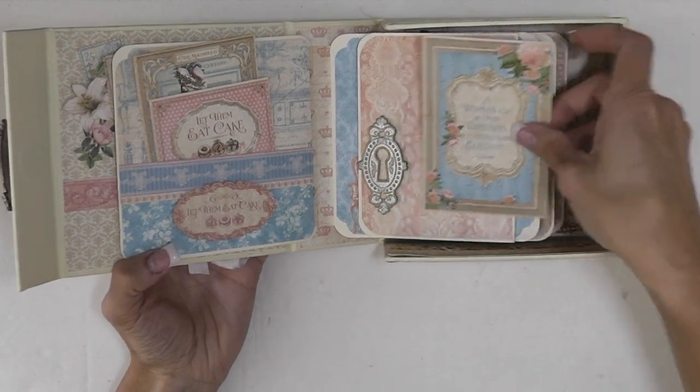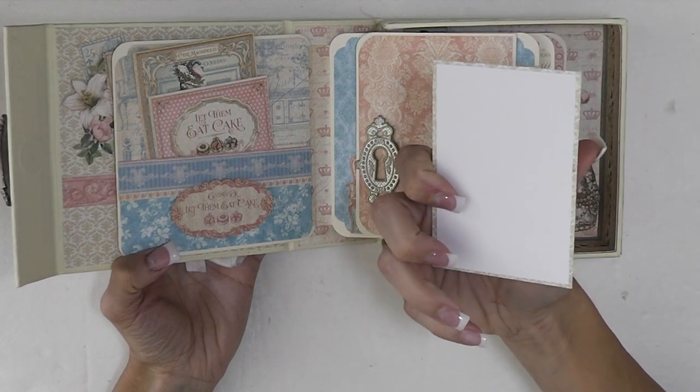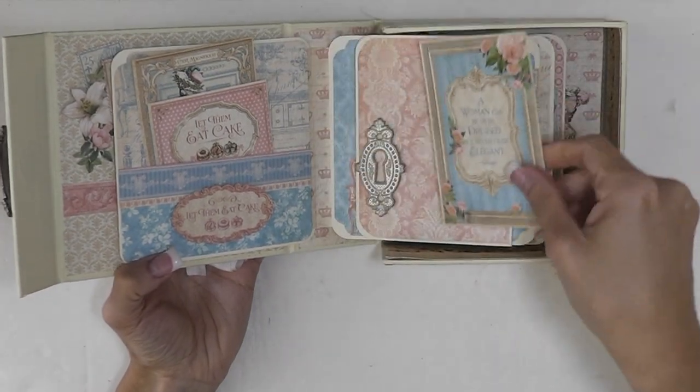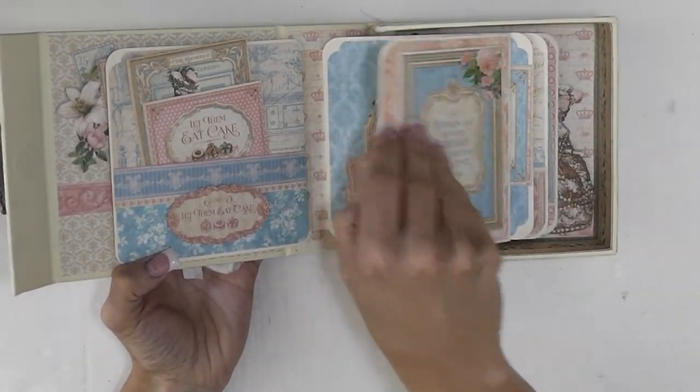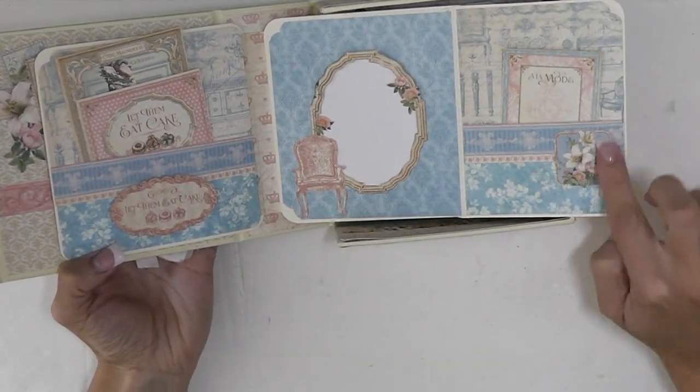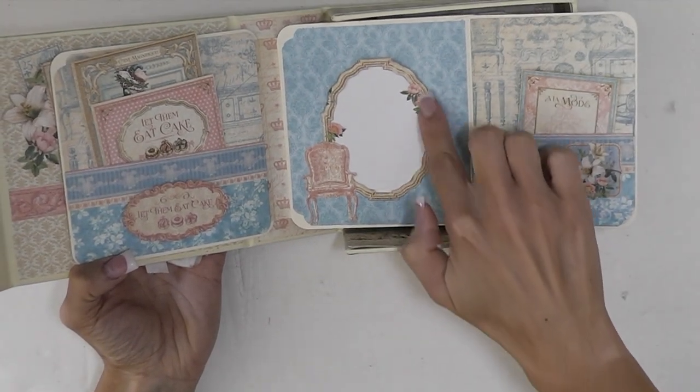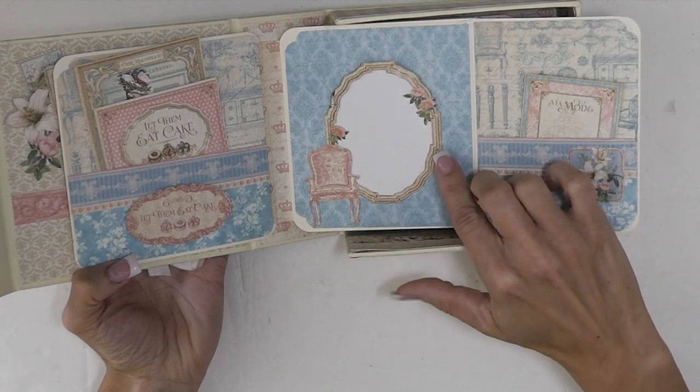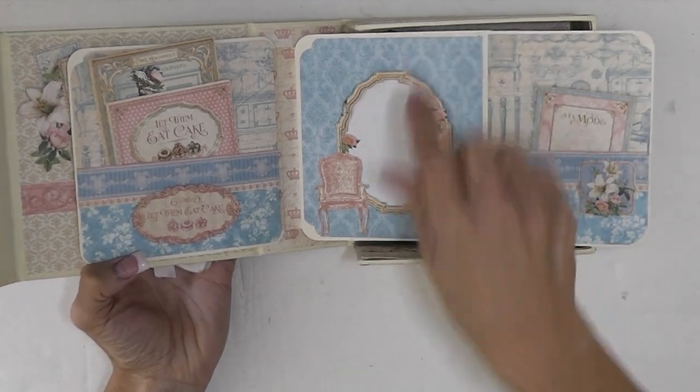And then tucked behind is one of the cut aparts. And then I just added a little white photo mat for journaling or a photo. And then you can put of course another photo right there. And then we just open up the flap. And we have a little sticker here with a pocket and one of the cutouts. And then another frame from the 12x12 paper.